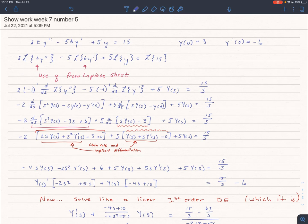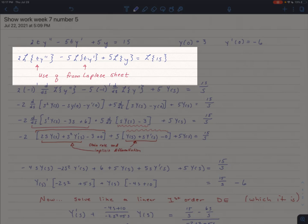All right, let's do a quick run-through of week 7 homework number 5 question. So this was different because we had a t times a y double prime and a t times a y prime.